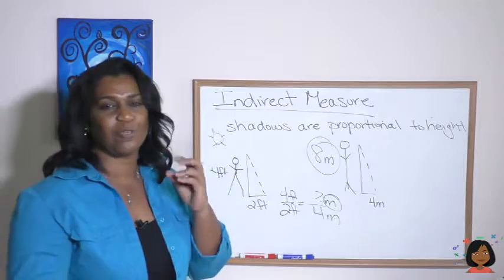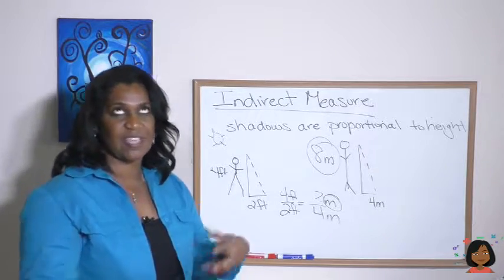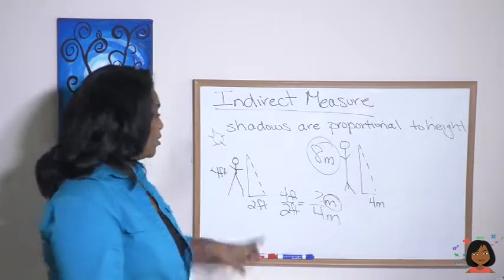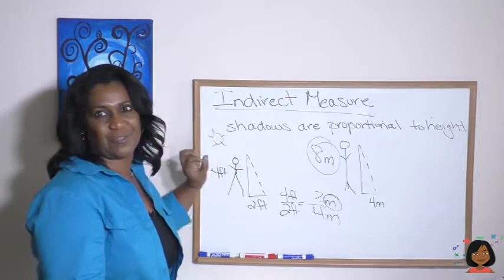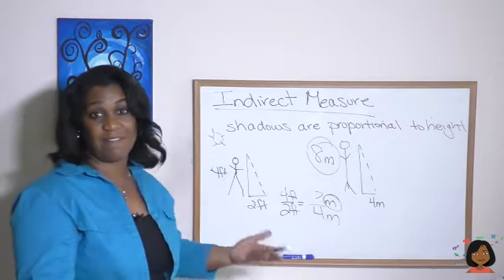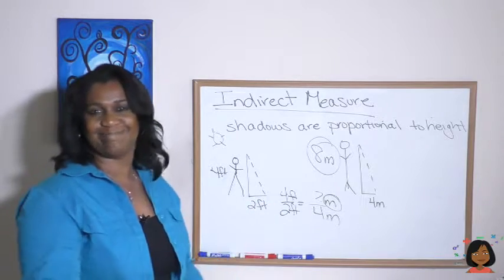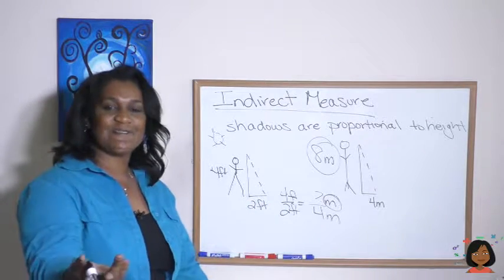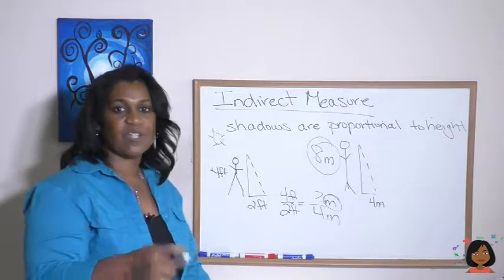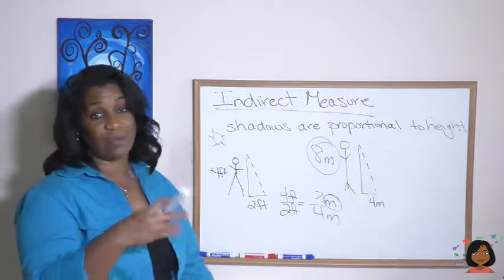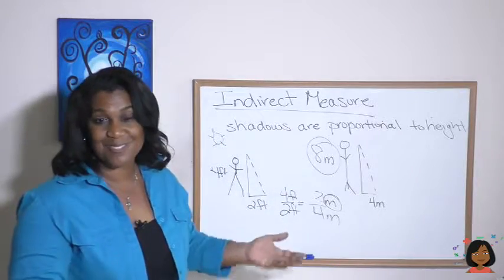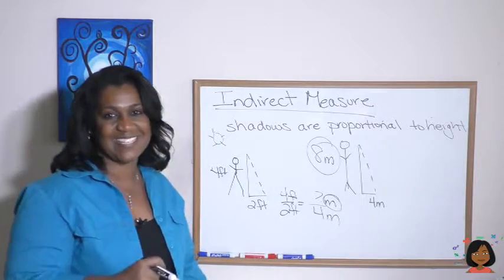So long as you remember you're using the same philosophy as similar triangles — we're just talking about people, trees, or poles with their shadow, and the shadow is the base of the triangle — you'll be fine. Go check out the website and we're going to do some practice problems on these similar triangles, or indirect measures with shadows. It's Nicole, the math lady. I'll see you next time.